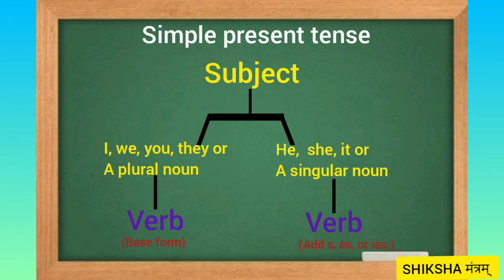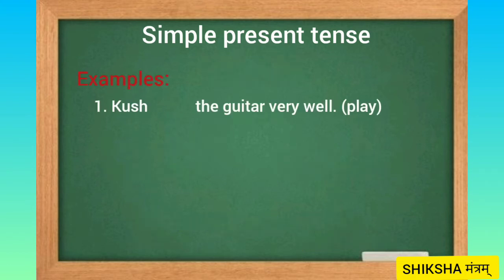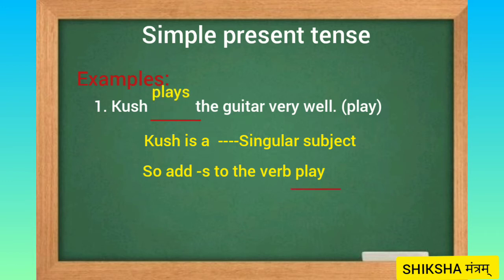And at last we add an object. Now let's see some examples. One: Kush dashes the guitar very well. The verb is 'play'. Now Kush is a singular subject, so we will add S to the verb play, and the sentence will be: Kush plays the guitar very well.